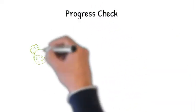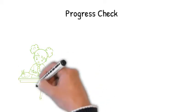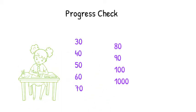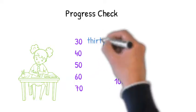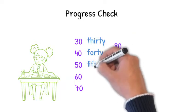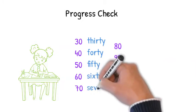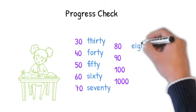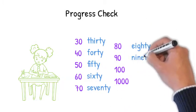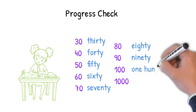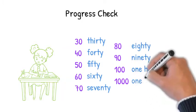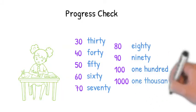So this time we looked at some more two-digit numbers written in numerals as well as a three-digit and a four-digit number. Again, your task was to write these numbers in words. Let's see how you did. 30, 40, 50, 60, 70, 80, 90, 100, and 1,000. Well done.